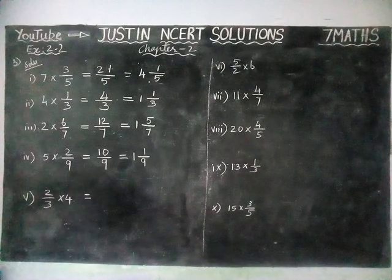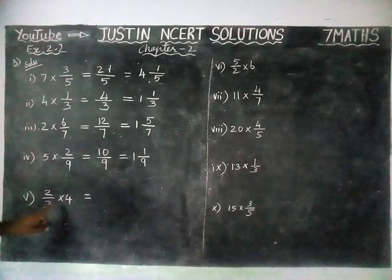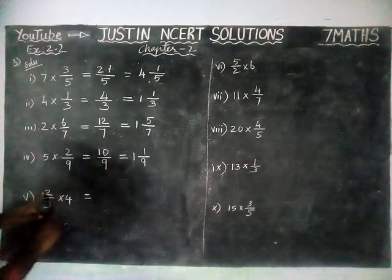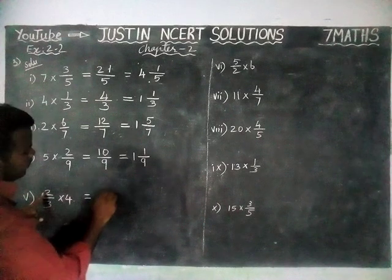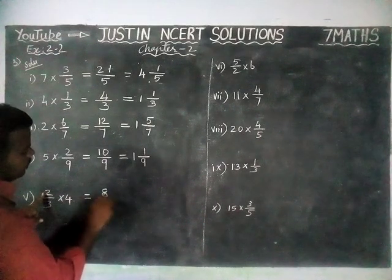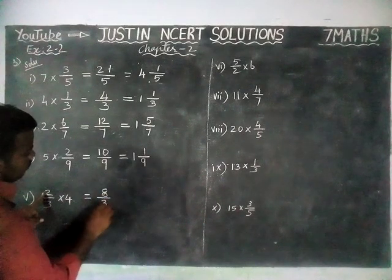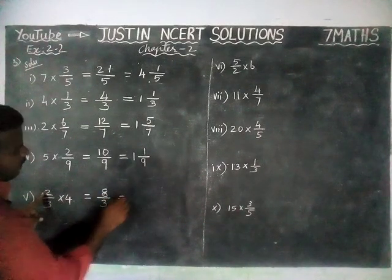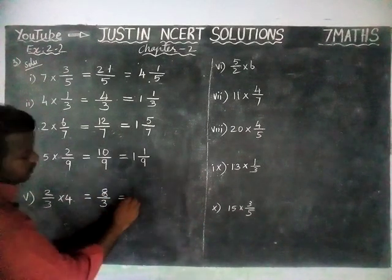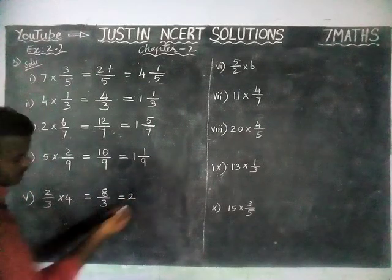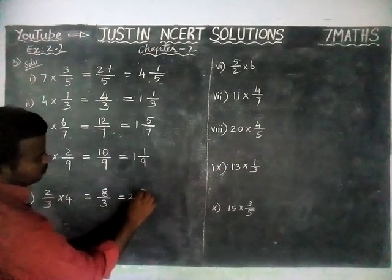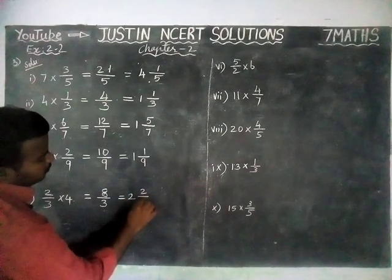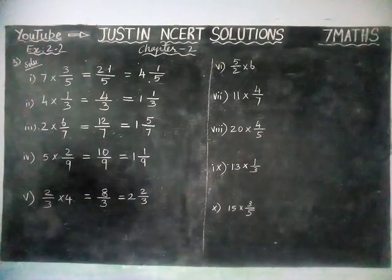Next, 5th question: 2 by 3 into 4. We multiply the numerator by the whole number: 4 twos are 8, divided by 3. In 8, there are 2 threes — 2 threes are 6, remaining 2 — divided by 3. The answer is 2 and 2 by 3.